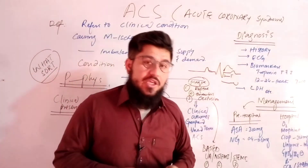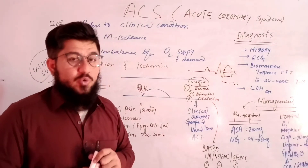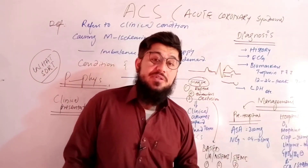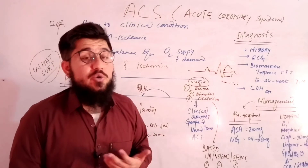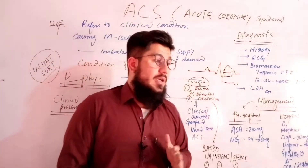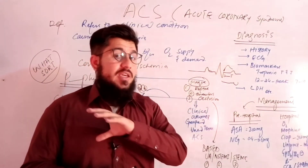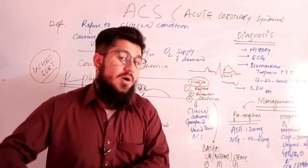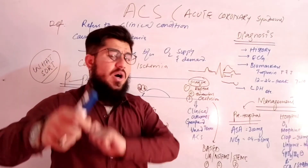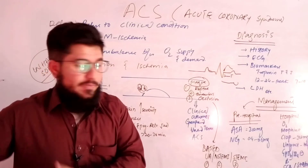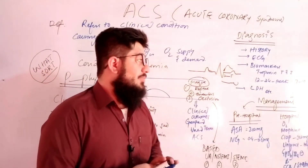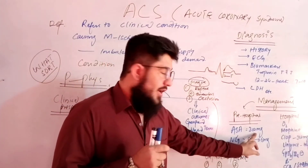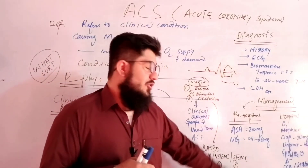Now coming to management, which is of two types: pre-hospital and hospital management. ACS is a medical emergency, so treatment must begin outside the hospital. Pre-hospital management includes ASA 300 mg and nitroglycerine 0.5 to 0.6 mg. Once hospitalized, we introduce oxygen.